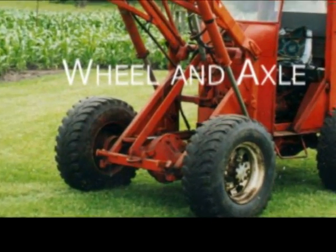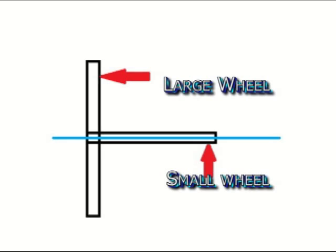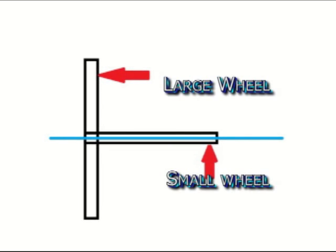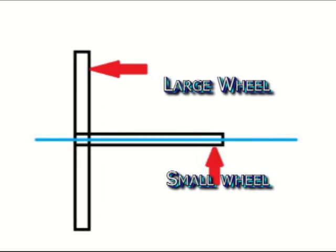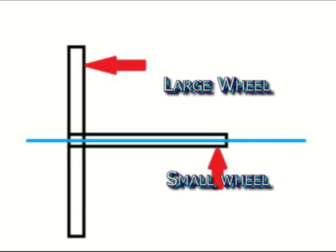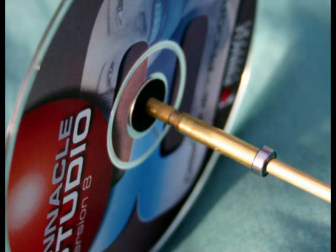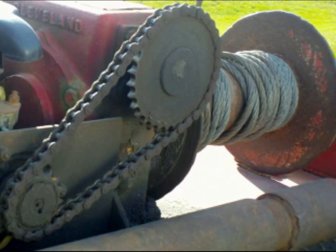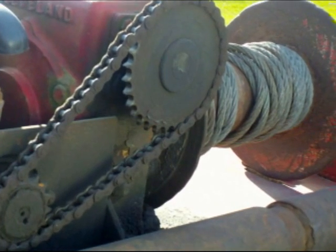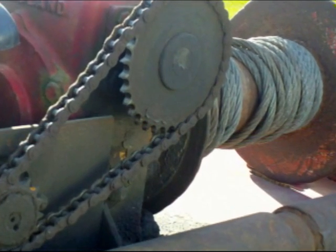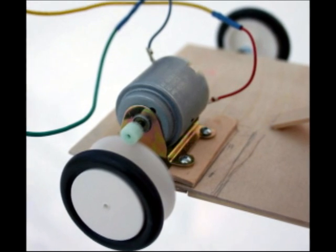The wheel and axle consists of a larger wheel and a smaller wheel that are connected through the same axis. When torque is applied to one of the wheels, there is a mechanical advantage applied to the other wheel, like with the lever. This torque can be applied through a connecting chain, a cable, belt, or the wheels could be meshing gears.